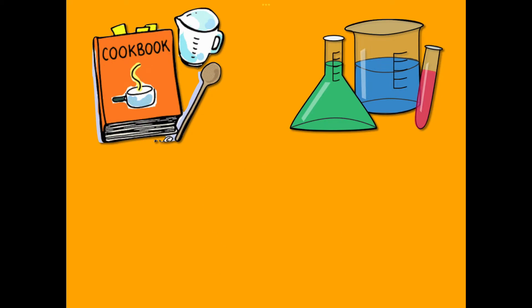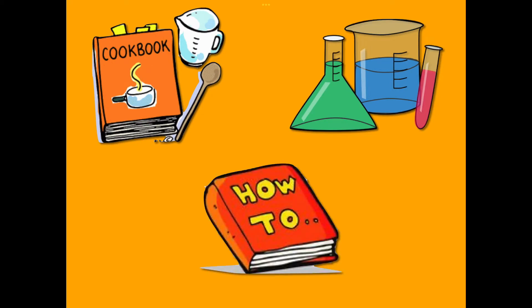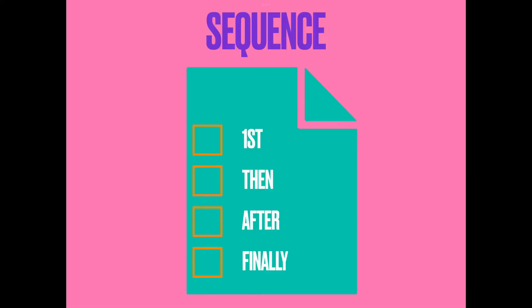Recipes, science experiments, and instructions are examples of sequence text pattern. Sequence text pattern is used when the purpose is to list something, either events or instructions, in a certain order.